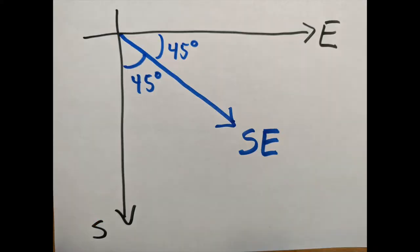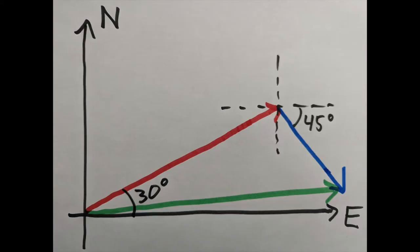So 30 degrees north of east means you turn 30 degrees from east towards north. The second expression, due southeast, means exactly halfway between east and south. So it makes a 45 degree angle with the east and south axes. When we put all that together into one picture, it looks like this.